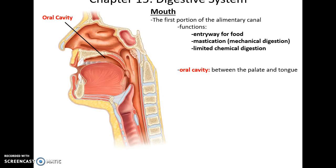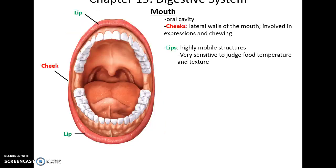Beginning of the alimentary canal: the oral cavity of the mouth. This is the entryway for food. Mastication occurs here — mechanical digestion — and also a limited amount of chemical digestion. The oral cavity is specifically the space between the palate and the tongue. The cheeks are the lateral walls, helpful for facial expressions and moving food around when chewing. The lips are very mobile structures, very sensitive to judging food temperature and texture.